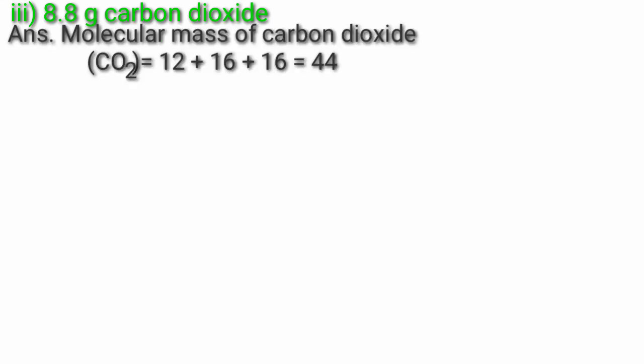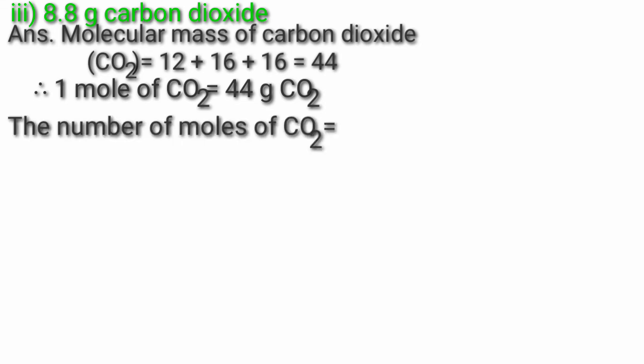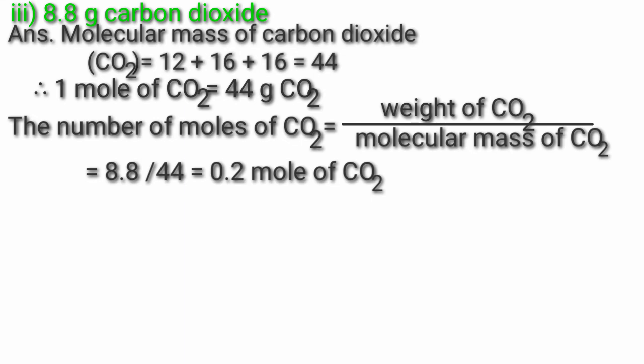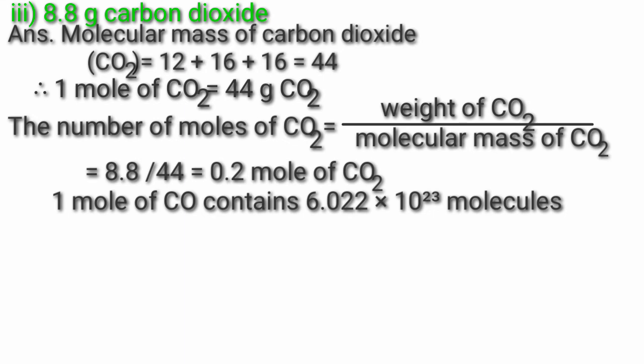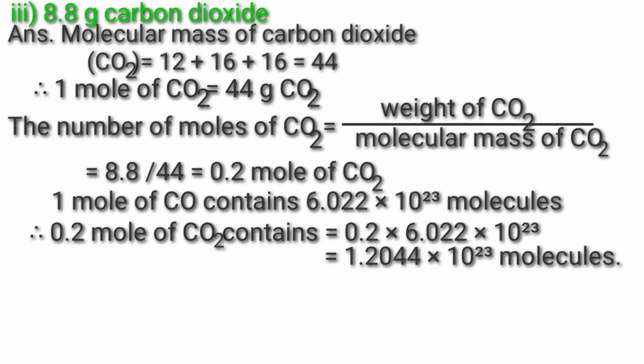Third, 8.8g carbon dioxide. Molecular mass of CO₂ = 12 + 16 + 16 = 44. Therefore 1 mol of CO₂ = 44g. Number of moles of CO₂ = 8.8 ÷ 44 = 0.2 mol of CO₂. 1 mol of CO₂ contains 6.022×10²³ molecules. Therefore 0.2 mol of CO₂ contains 0.2 × 6.022×10²³ = 1.2044×10²³ molecules.